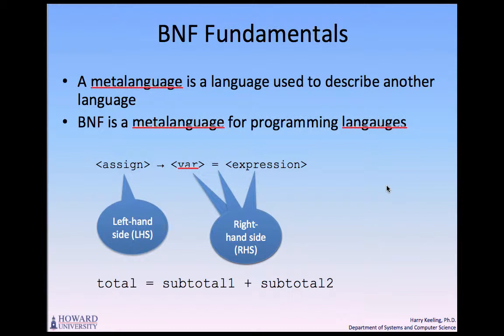BNF uses abstractions for syntactic structures. A simple Java assignment statement, for example, might be represented by the abstraction shown in the slide. The actual definition of an assignment can be given by this expression. The text on the left-hand side of the arrow, aptly called the left-hand side, or LHS, is the abstraction being defined.